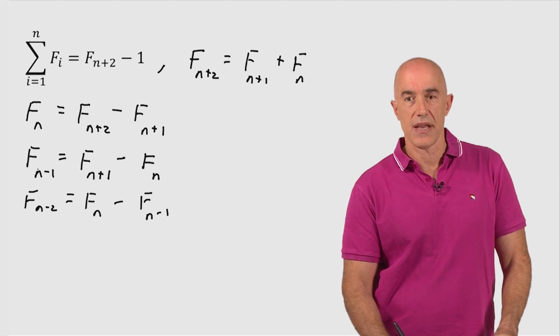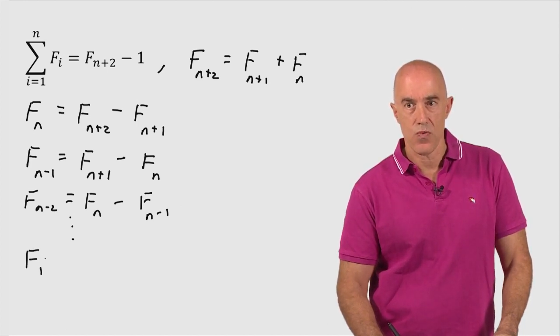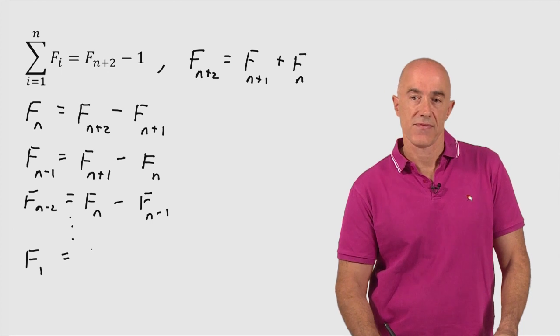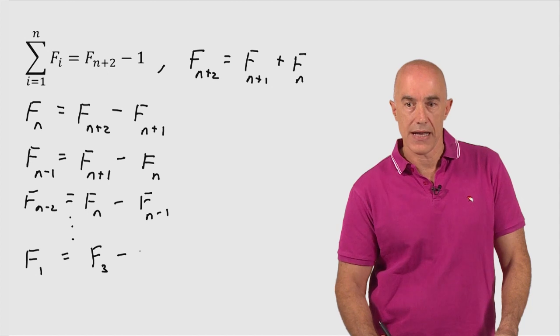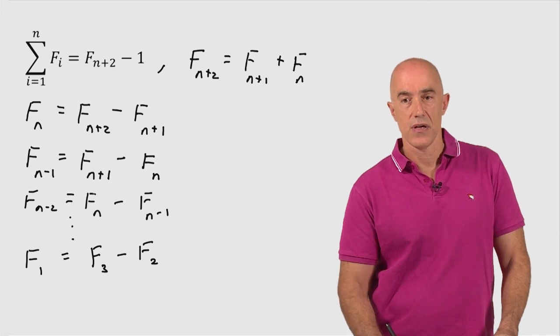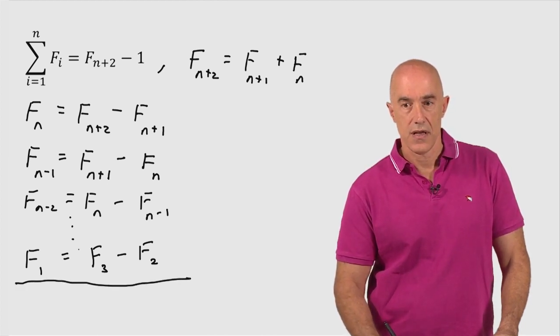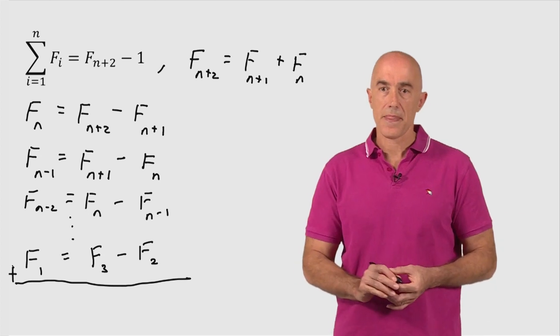And the idea being that we're going to have all the Fs here, so we can keep going down. And then the last one will be our F sub 1, our first term, right? And then this one will be 2 more than that. So this will be F sub 3 minus F sub 2, okay? So we have now on the left-hand side, we have all the Fs that we want to sum in the expression. So we can take this and then we can add them all. So there's a big plus sign here, okay? That's the idea.